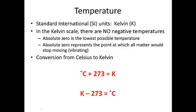Now, the reason why we use the Kelvin scale is that there are no negative temperatures. When we have 0 Kelvin, that is called absolute 0. It is the lowest possible temperature, and this represents the point at which all matter would stop moving, it would stop vibrating. Since temperature represents average kinetic energy, kinetic energy relates to movement, this is 0 movement.